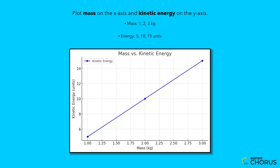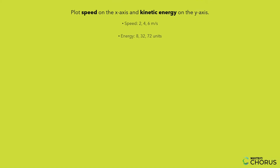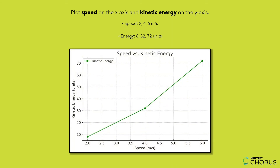Now let's try speed versus kinetic energy. Speed: 2, 4, 6 meters per second. Energy: 8, 32, 72 units. The graph curves upward — an exponential trend. Doubling speed causes kinetic energy to quadruple. This is why speed makes such a big difference in motion.